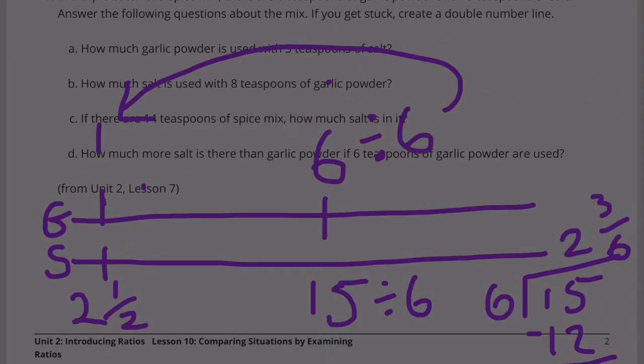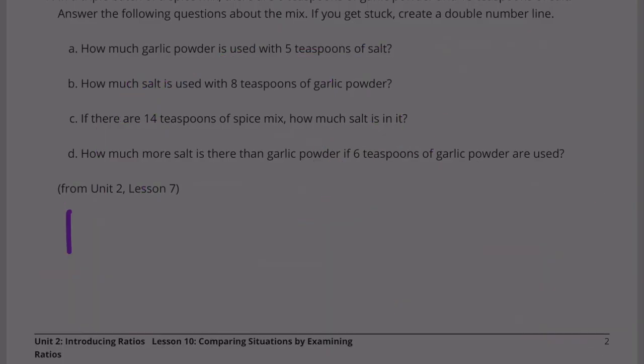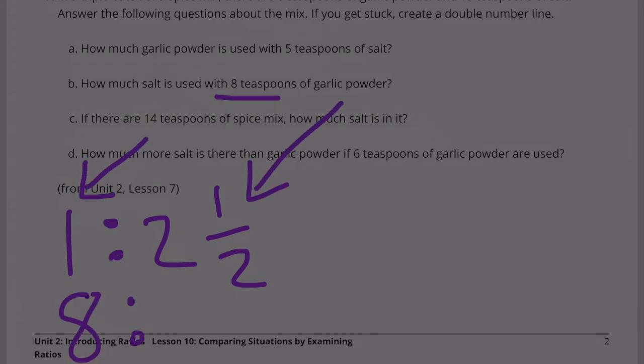So for every 1 teaspoon of garlic powder, there's 2 and a half teaspoons of salt. So this represents garlic powder, this represents salt. So it's a 1 to 2.5 ratio. So if we're going to have 8 teaspoons of garlic powder, that means we needed to multiply the 1 by 8. Now we need to multiply the 2.5 times 8.